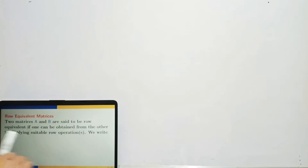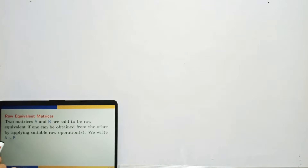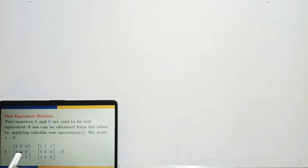Row equivalent matrices: two matrices A and B are said to be row equivalent if one can be obtained from the other by applying suitable row operations. We write this with the row equivalence symbol. For example, if we interchange the first two rows of one matrix we get the second, so these two matrices are row equivalent.